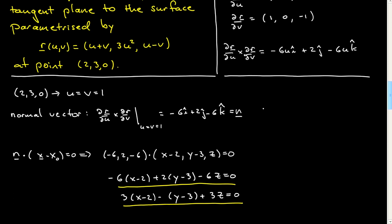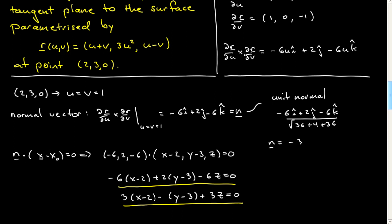If you needed to for some reason and wanted the unit normal, of course you would have to normalize this. You would divide this by its length, and the unit vector would be minus 3i-hat plus j-hat minus 3k-hat, all over the square root of 19.